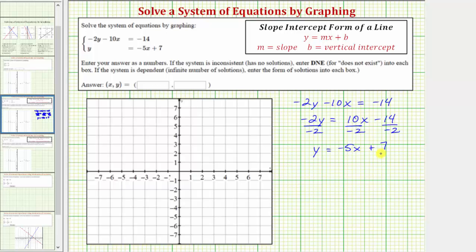Now that the equation is in slope-intercept form, notice how the slope m is equal to negative 5, which to graph we want as a fraction. Let's write this as negative 5 over positive 1. And notice b is equal to positive 7, which means the vertical intercept is the ordered pair 0, 7.